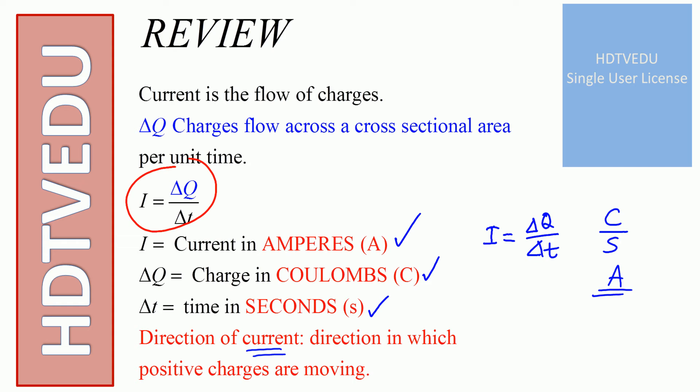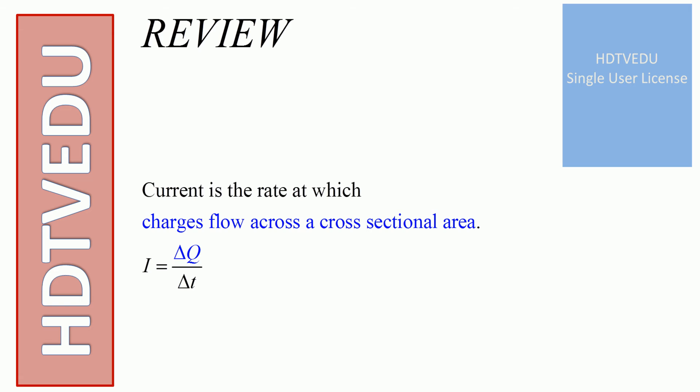Do not forget, in a metallic wire it is the electrons that move. Again, current is the rate at which charges flow across a cross-sectional area.